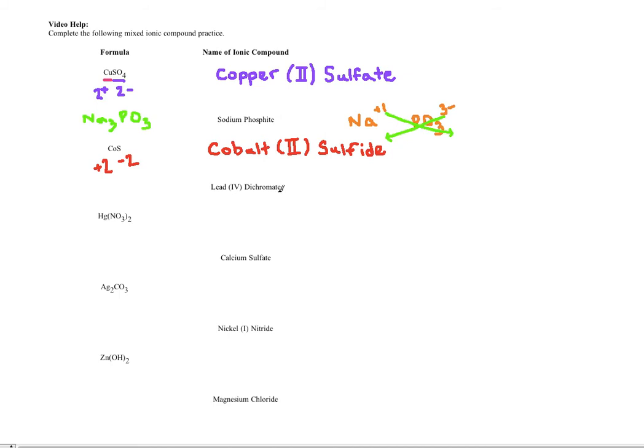All right, for lead IV dichromate, it's going to be Pb. And the IV right there, what that tells me is that I am dealing with lead that has a charge of plus 4, so I need to include the plus 4 charge there. And then the next thing I need to do is write my formula for dichromate. And so what you should do is you should look at your chart, and the formula for dichromate is Cr2O7, and the charge of dichromate is 2 minus.